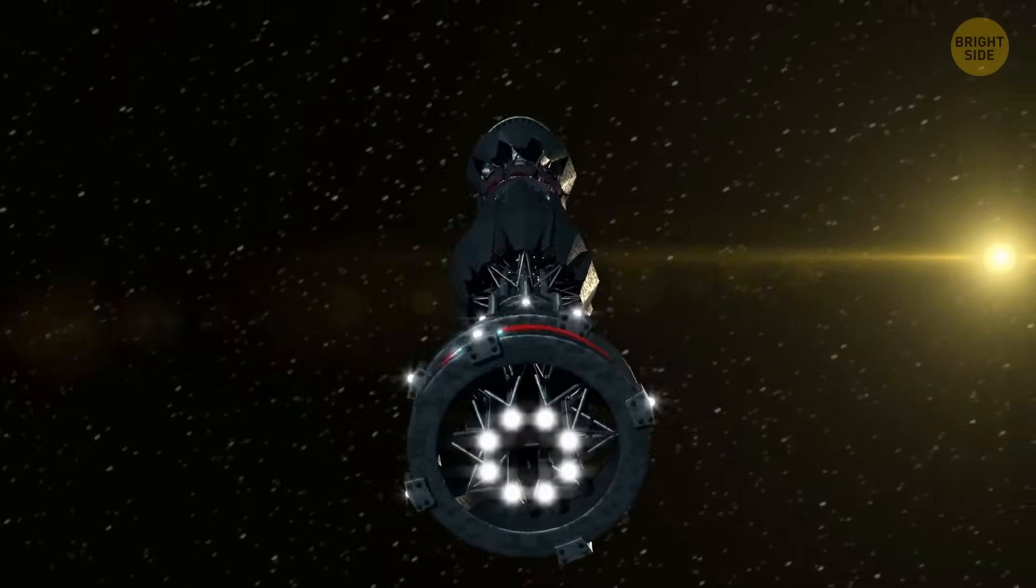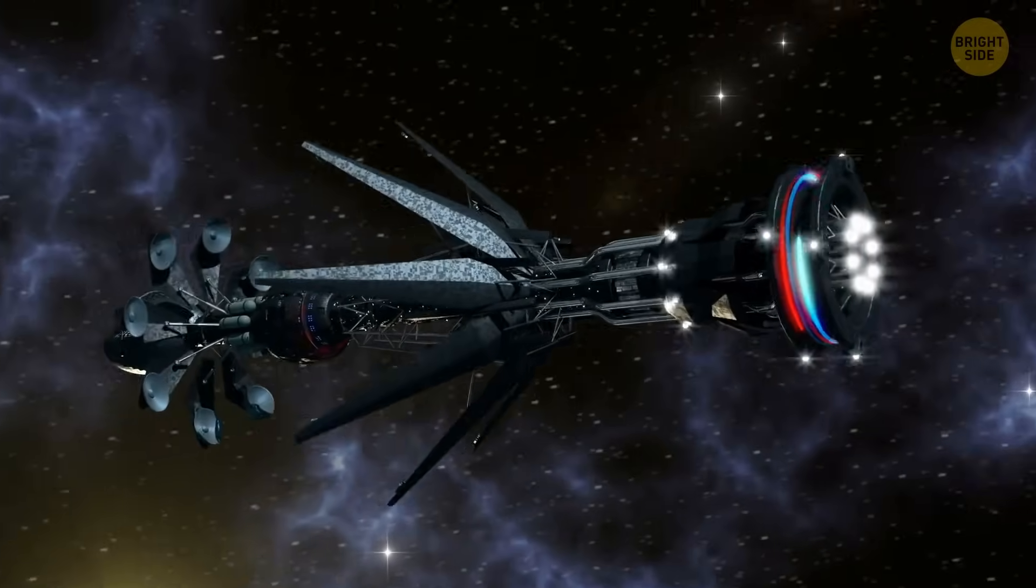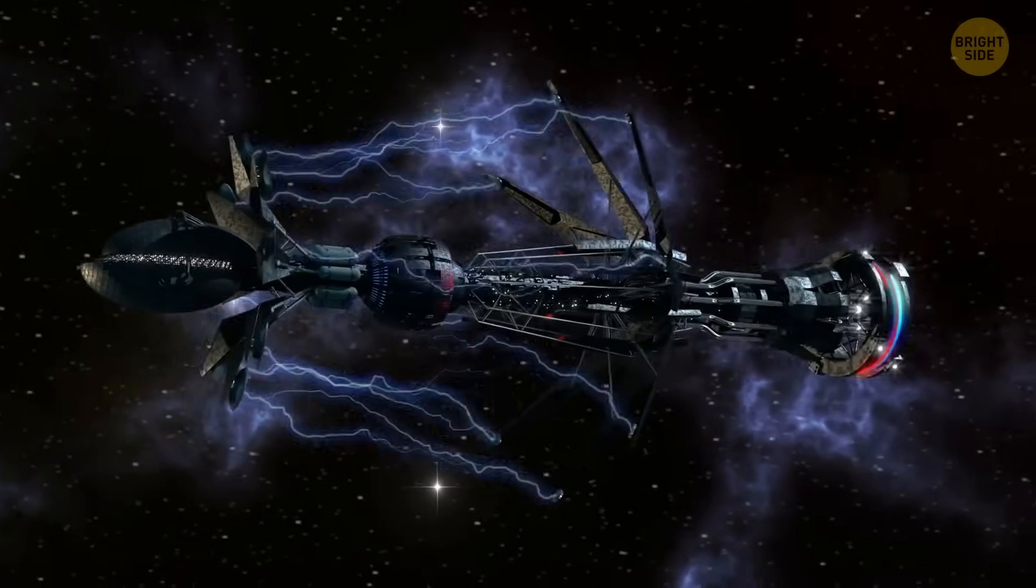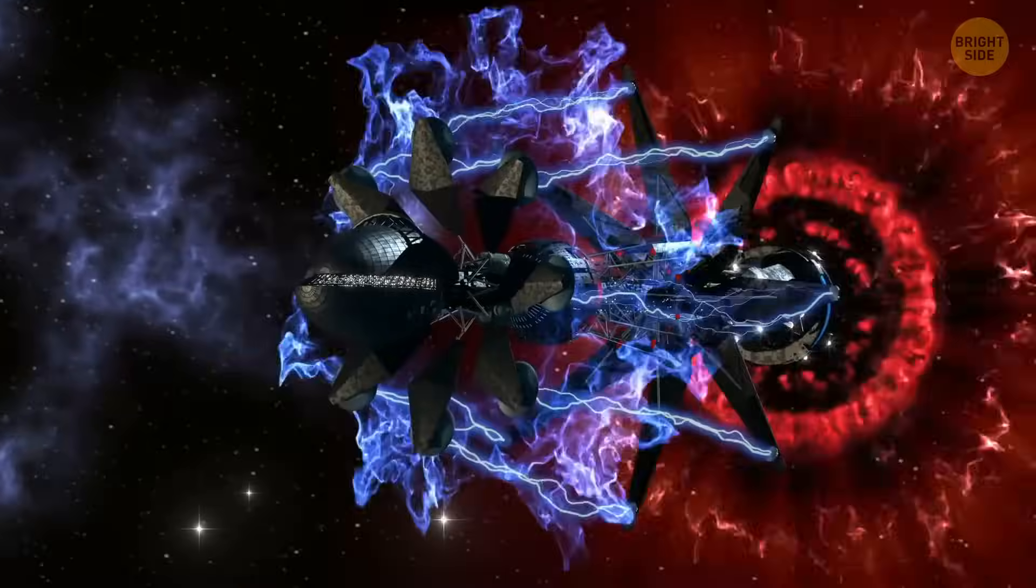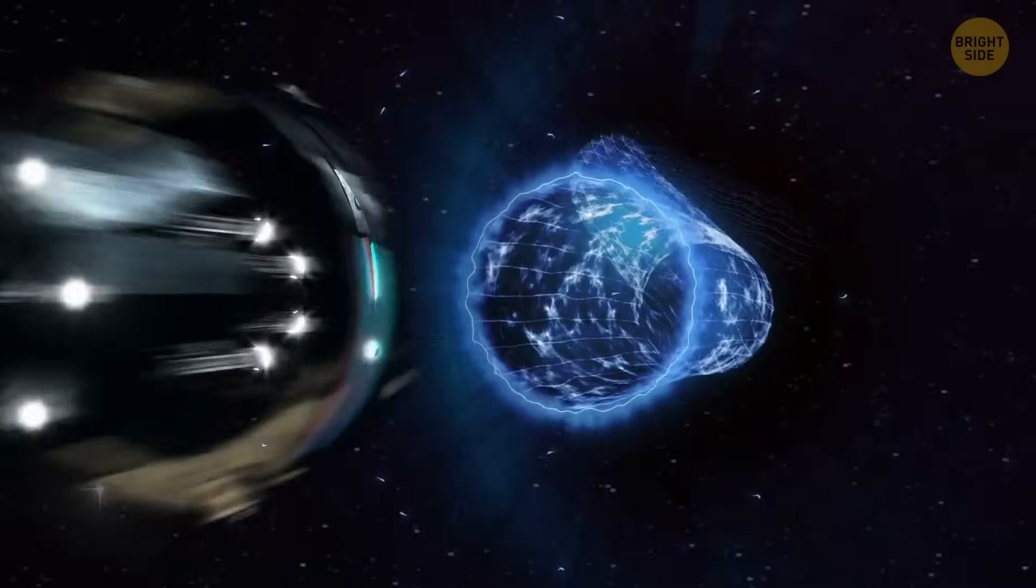In the Star Trek universe, the warp drive works by smashing matter and antimatter together, converting the resulting explosion into propulsion, and somehow using that energy to zoom past the speed of light. Basically, a cosmic firecracker powers the ship faster than anything we can imagine.